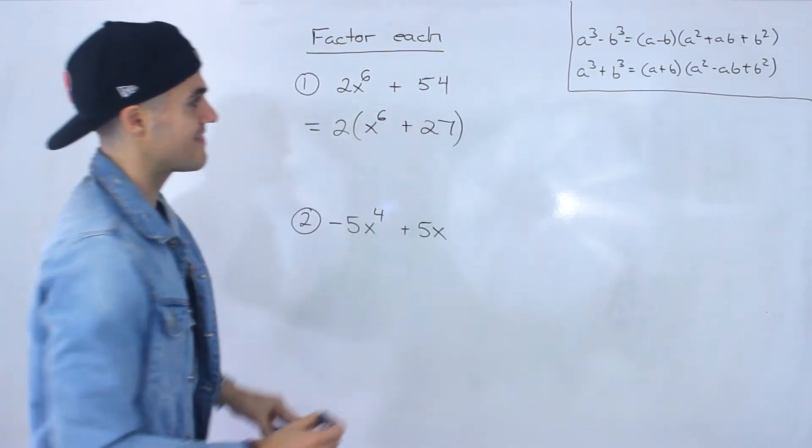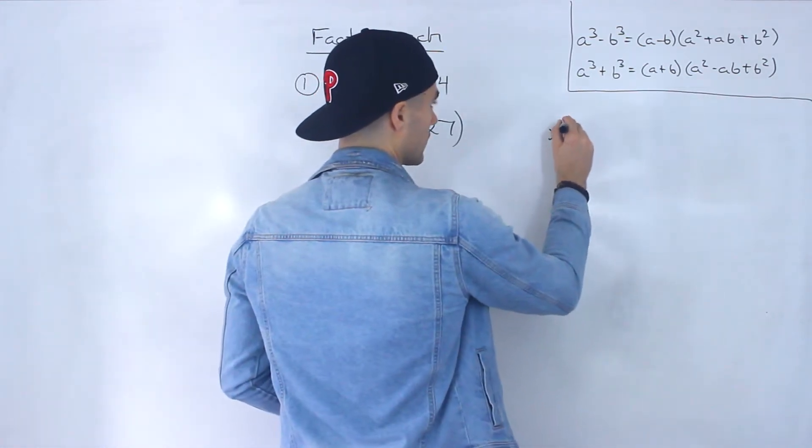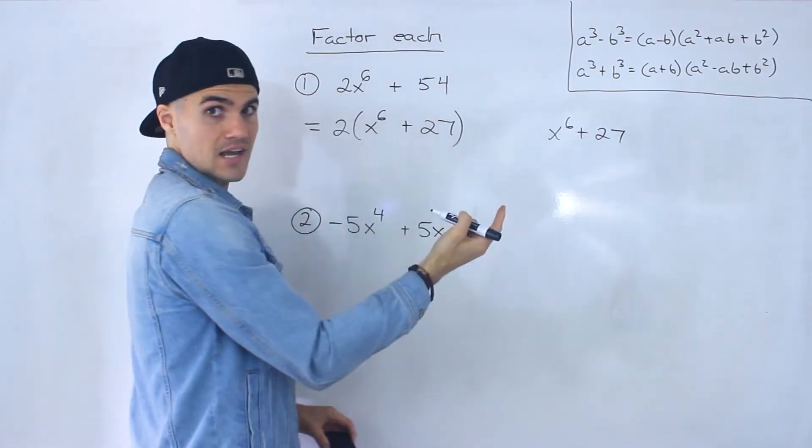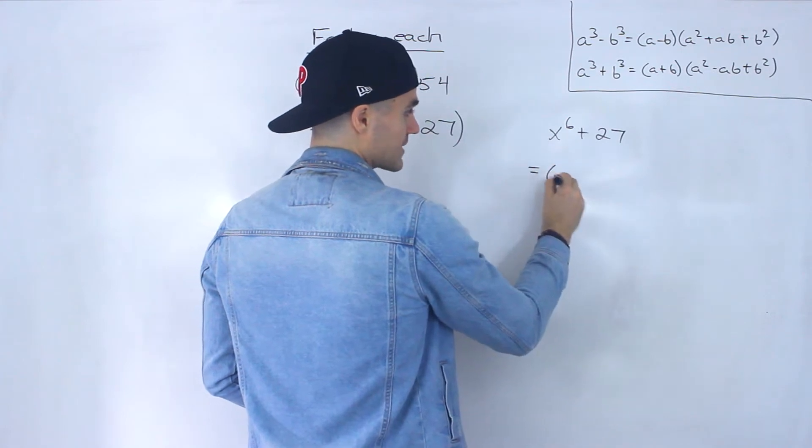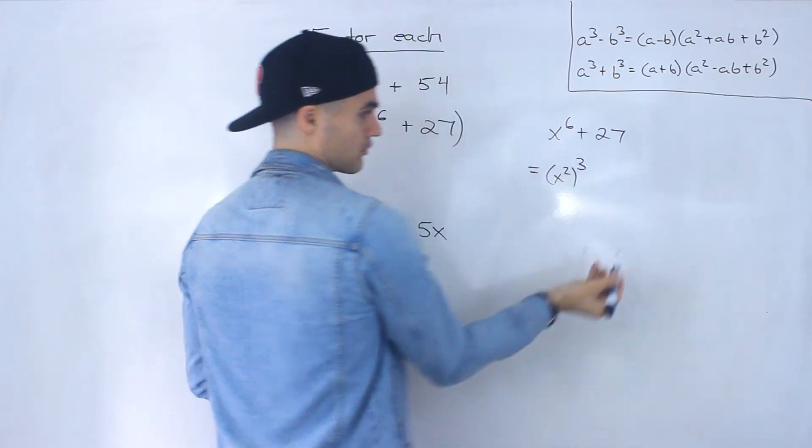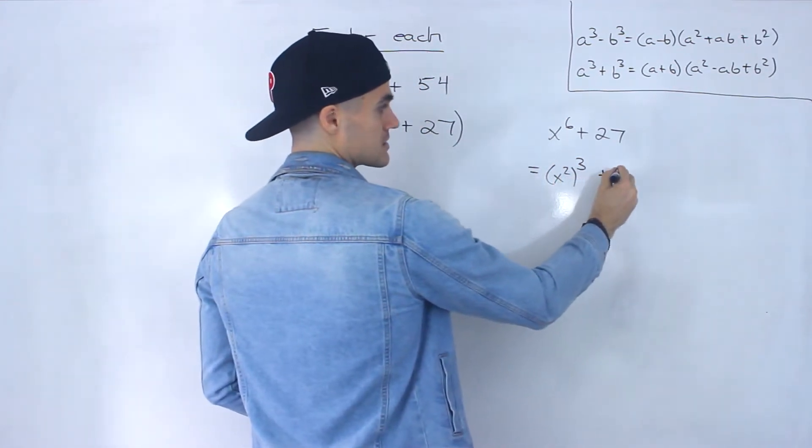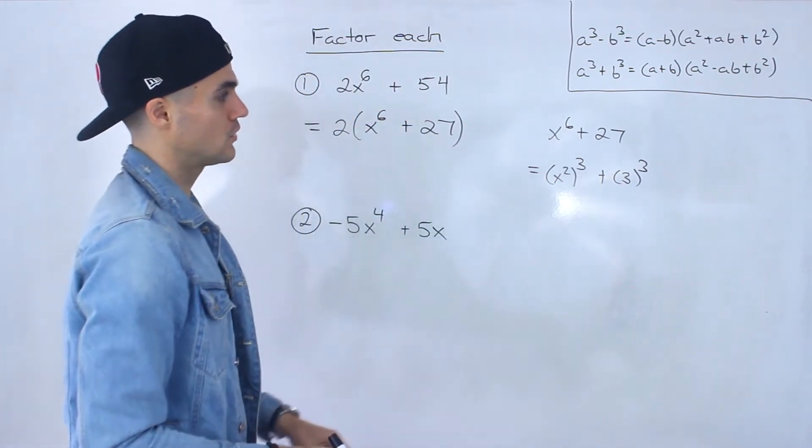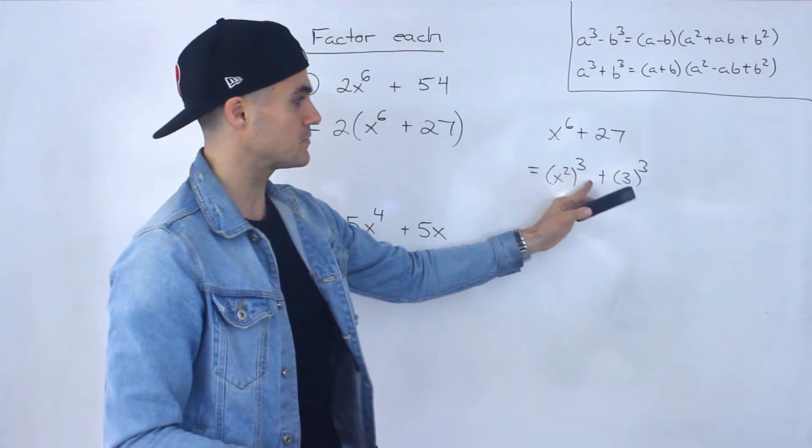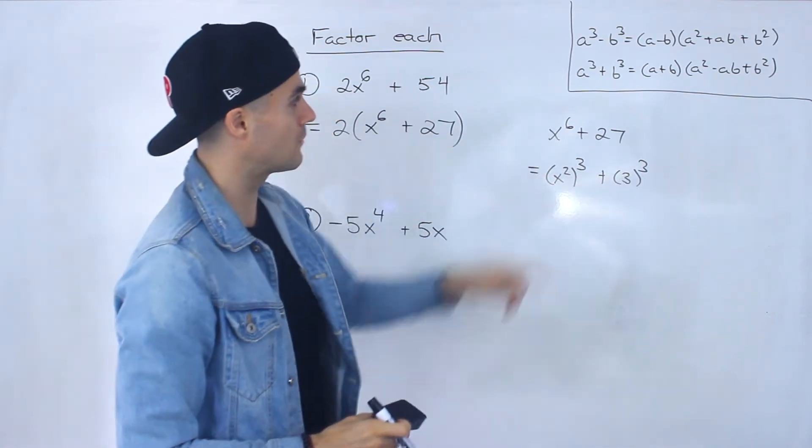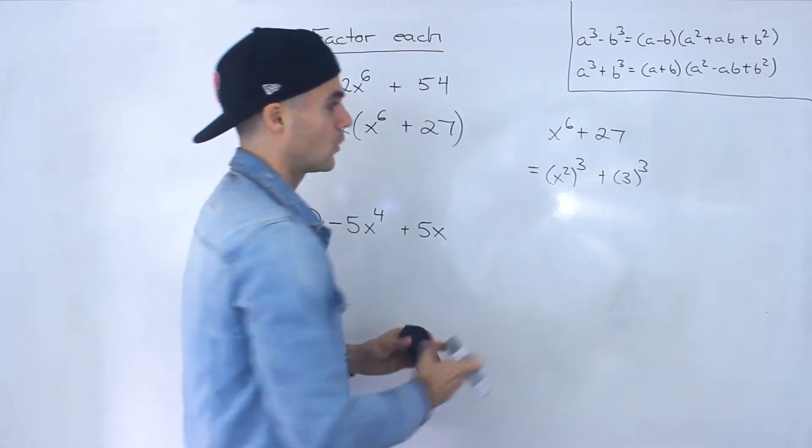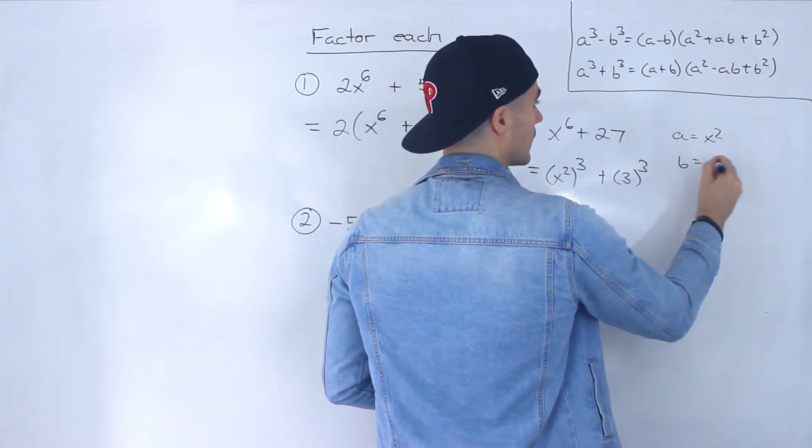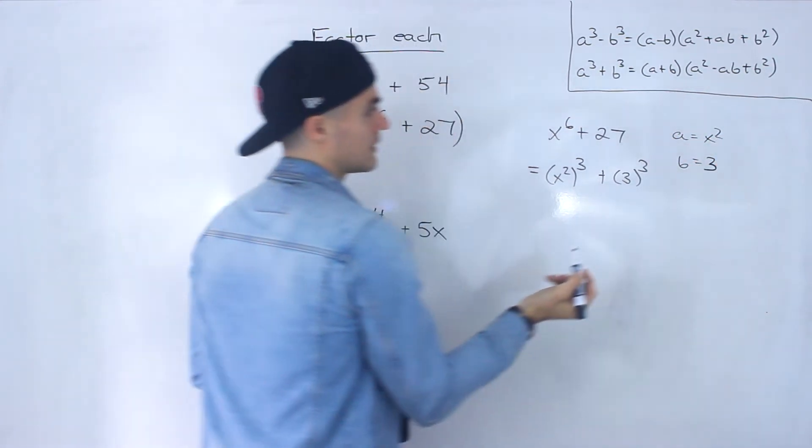So took out a 2 and now we got x to the power of 6 plus 27. And now notice that this, if I rewrite it over here, this is a sum of cubes. We can take this and rewrite it as x to the power of 2 to the power of 3 plus 3 to the power of 3. So notice we got it in that a to the power of 3 plus b to the power of 3 format. We got in this format here where the a value in this case is x squared and then the b value in this case is 3.